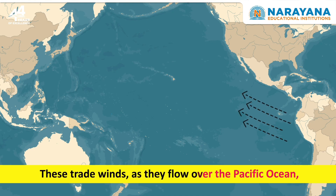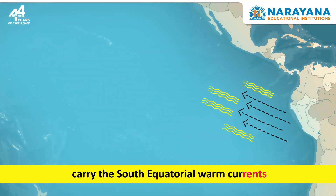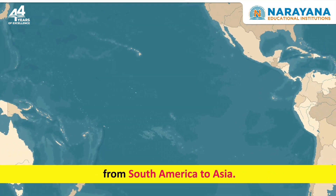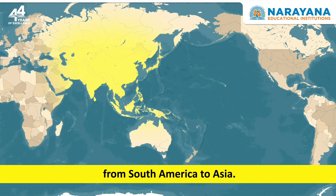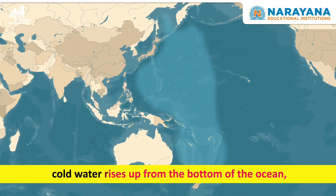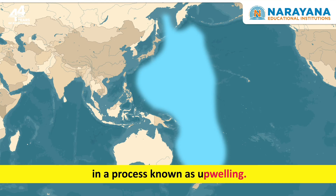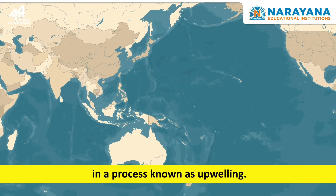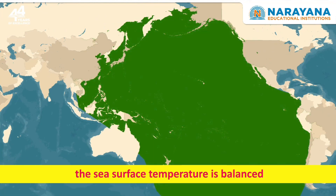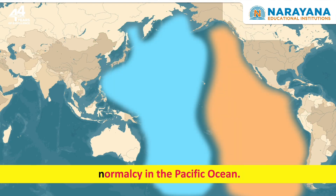These trade winds, as they flow over the Pacific Ocean, carry the south equatorial warm currents from South America to Asia. To counter the warm currents, cold water rises up from the bottom of the ocean in a process known as upwelling.